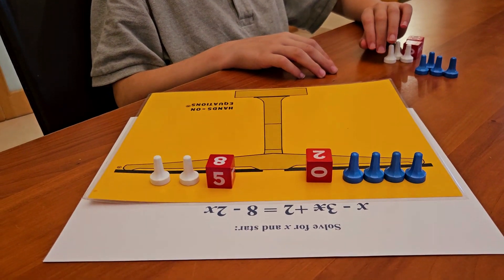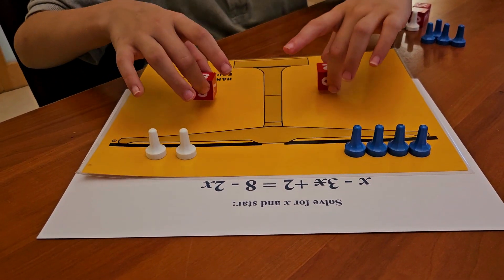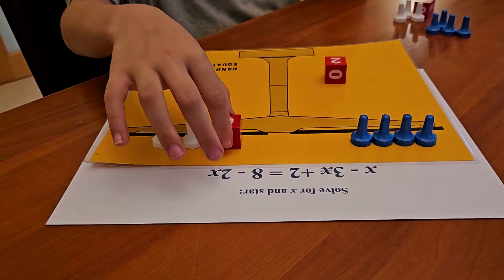Now we're ready to solve. How would you like to do that? Take away two values from each side. Good.